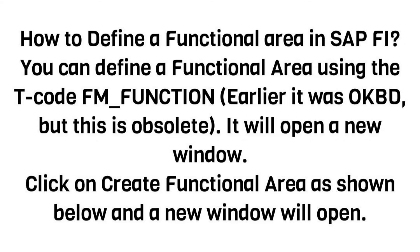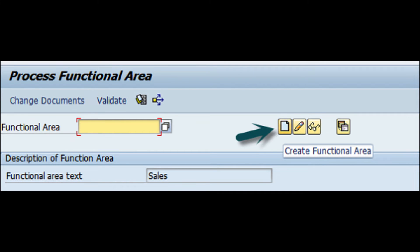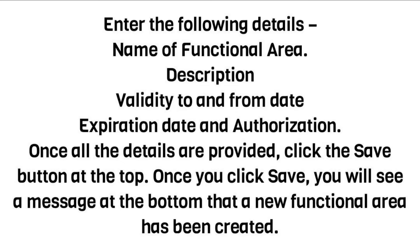It will open a new window. Click on Create Functional Area as shown, and a new window will open. Enter the following details: Name of functional area, Description, Validity to and from date, Expiration date, and Authorization. Once all the details are provided, click the Save button at the top. You will see a message at the bottom that a new functional area has been created.